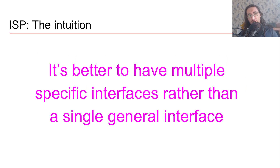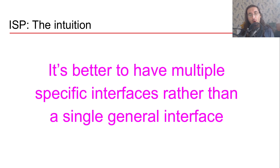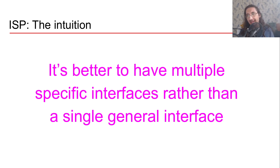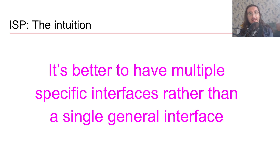Let's take a look at the intuition behind ISP. The idea is that it's better to have multiple specific interfaces rather than a single general interface, and this makes sense if you think of interfaces as abstract classes. Rather than having a general abstract class with a ton of different methods and then concrete implementations that take and implement all of those abstract methods, you want abstract classes that are thinner, so that concrete implementations can have only the methods they actually use.